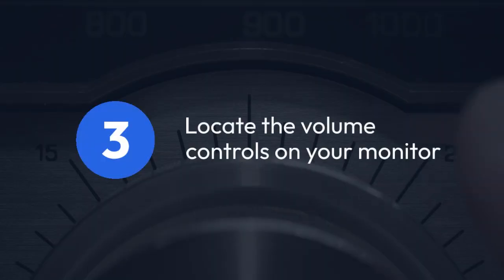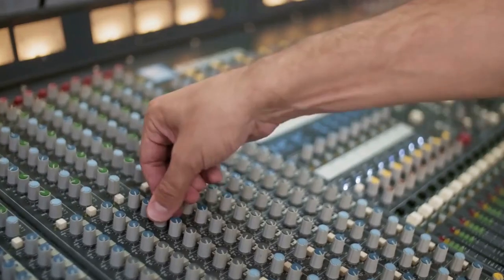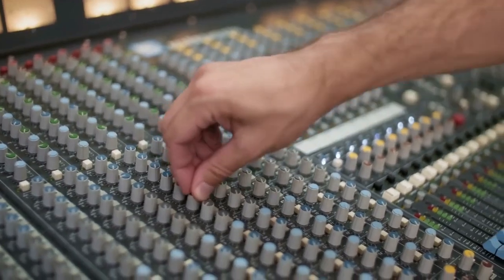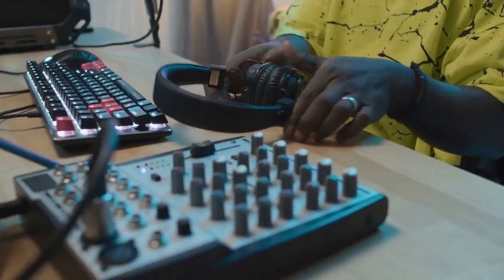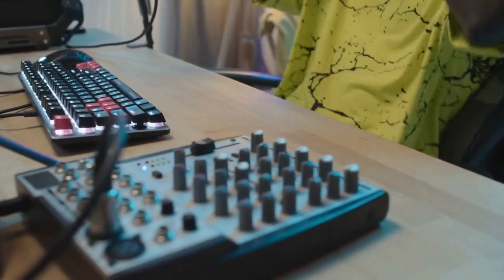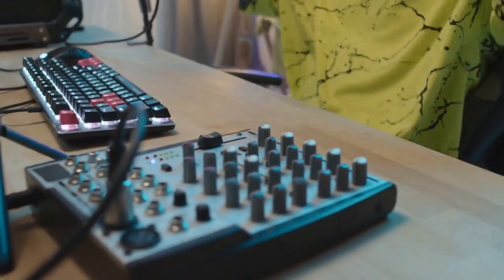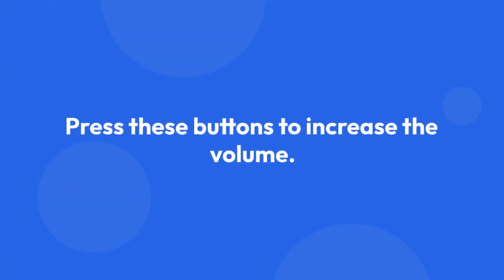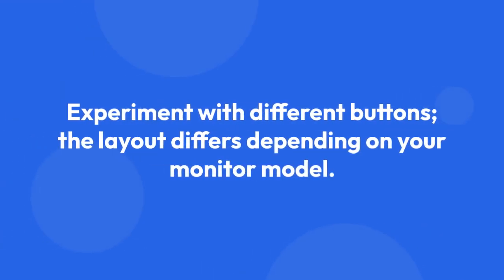Locate the volume controls on your monitor. Some Dell monitors have physical buttons on the front, side, or back, usually marked with a speaker icon or a volume symbol. Press these buttons to increase the volume. Experiment with different buttons, as the layout differs depending on your monitor model.